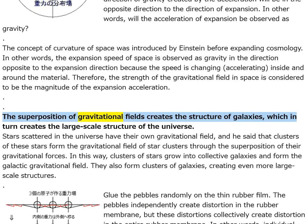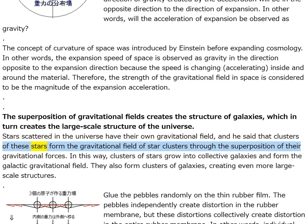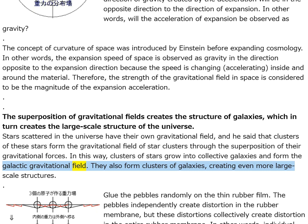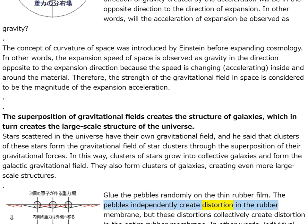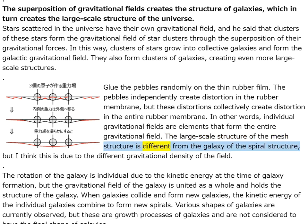The superposition of gravitational fields creates the structure of galaxies, which in turn creates the large-scale structure of the universe. Stars have their own gravitational field; clusters of stars form the gravitational field of star clusters through superposition. Clusters of stars grow into collective galaxies and form the galactic gravitational field, then clusters of galaxies create even larger-scale structures. Like pebbles on a rubber film — individual pebbles create distortion independently, but these distortions collectively create distortion in the entire rubber membrane. The large-scale mesh structure differs from the spiral structure, due to different gravitational density of the field.